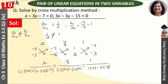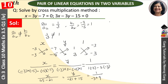So our next step gives us: x upon — this is minus minus, which is plus 45, and 3 times minus gives minus 21. That is equal to y upon: minus 7 into 3 is minus 21, and minus minus gives plus 15. That is equal to 1 upon: minus 3 plus 9. We get x upon 45 minus 21, that is 24, equal to y upon minus 6, equal to 1 upon 6.